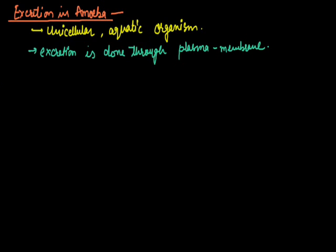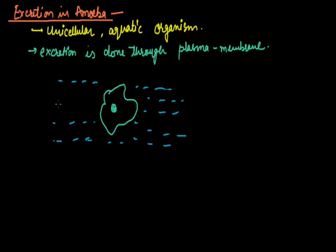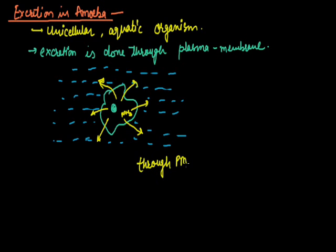Excreted wastes are eliminated through the plasma membrane. Suppose this is amoeba's body membrane which is found in aquatic media, so it is always surrounded by water. Here the plasma membrane is responsible for all functions. Whatever metabolic waste is formed inside the body of amoeba—suppose the metabolic waste is ammonia—as soon as it is formed, it is eliminated out through the plasma membrane.